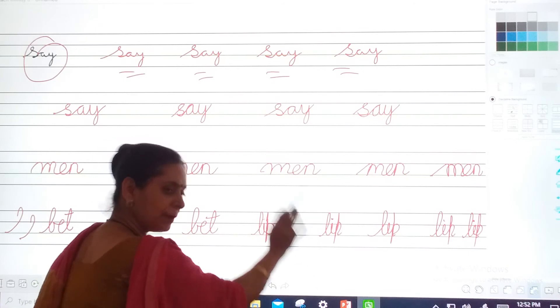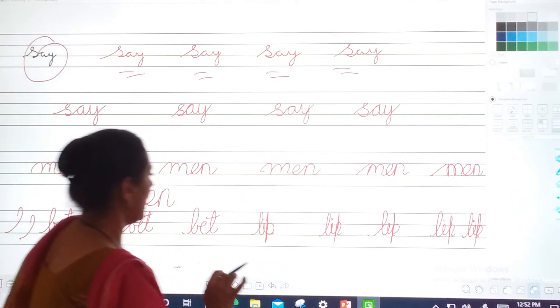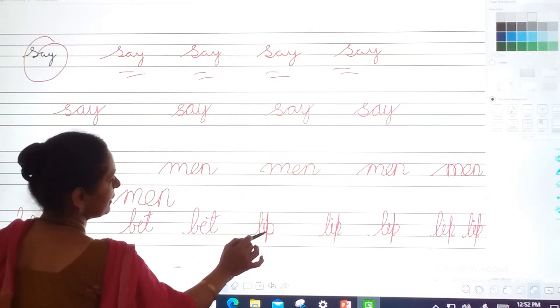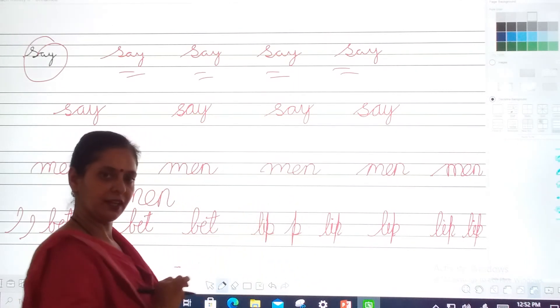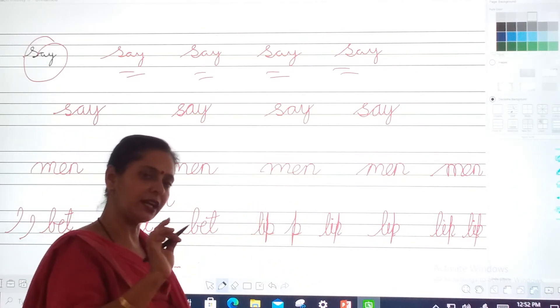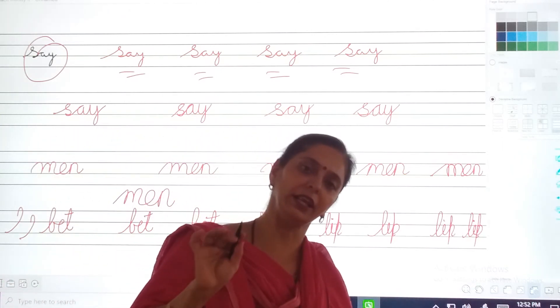L, I, P. Okay? And see. L, I, P. Jho P hooga beta. Woh is thara se jayega? Pura isko aise karke hum log aise p karenge. Okay? So this is the correct way of writing spelling of lip.